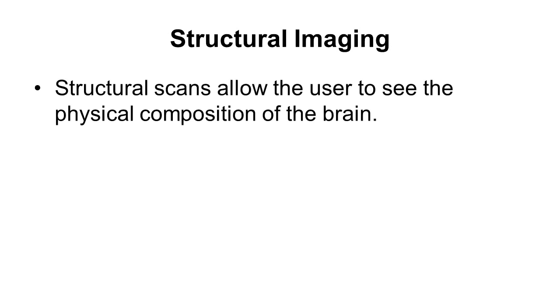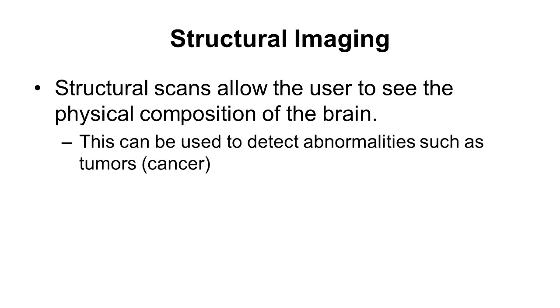Some of the first neuroimaging techniques we developed were structural scans — structural imaging. This is a kind of neuroimaging that just allows us to see the physical composition of the brain. You would want to do this to study all the different parts of the brain and what they look like, but also to detect abnormalities like a tumor. If you're looking for a brain tumor, then you should get a structural scan.